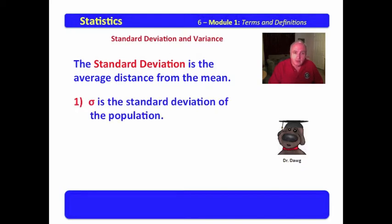Now, sigma, lowercase sigma, which is this little circle with a leg on it, is the standard deviation of the population. Just as mu represents the mean of the population, lowercase sigma represents the standard deviation of the population. S is the standard deviation of the sample.